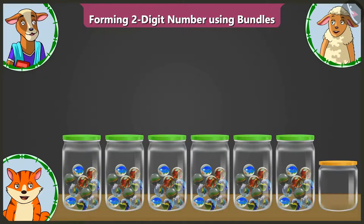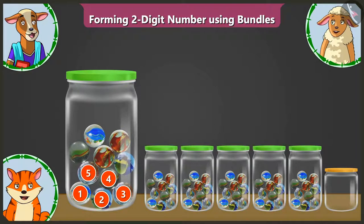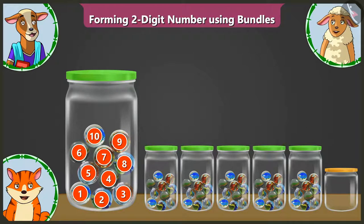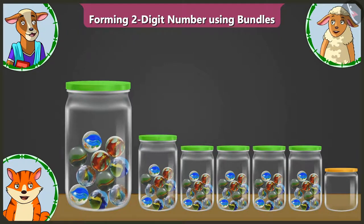Look, here are some jars filled with bubbles. Let us count. The first jar has 1, 2, 3, 4, 5, 6, 7, 8, 9 and 10 marbles. This means that this is one group of 10s.